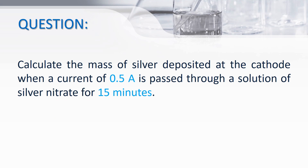Using these two laws of electrolysis, we can solve many calculations. We are able to calculate the mass of a deposited substance, the volume of a gas liberated, or the charge passed during electrolysis. For example, in this question, we need to calculate the mass of silver deposited at the cathode when a current of 0.5 amperes is passed through a solution of silver nitrate for 15 minutes.